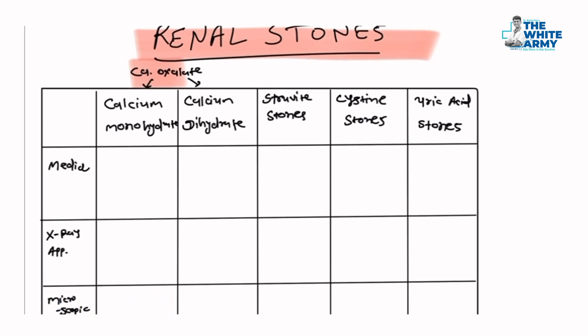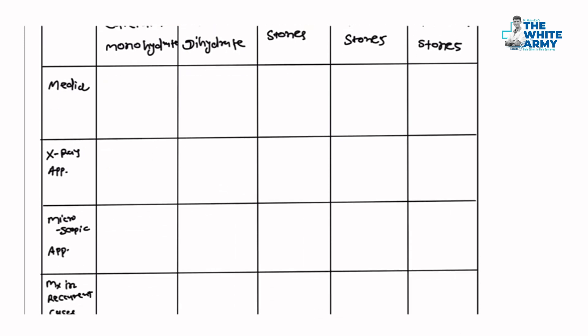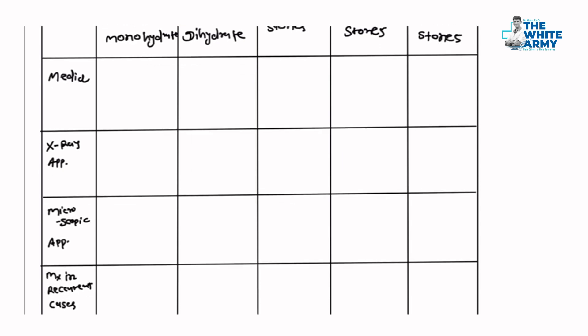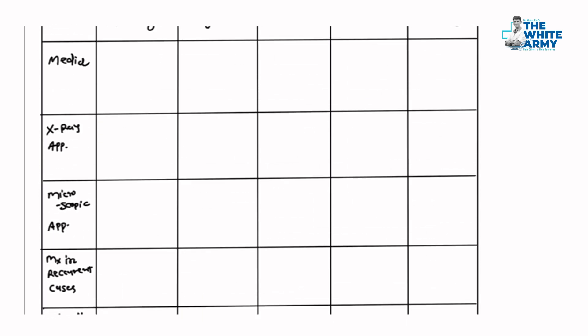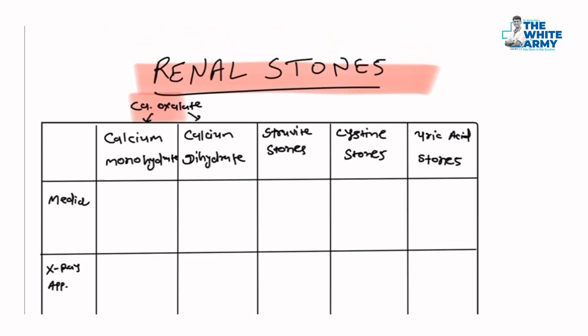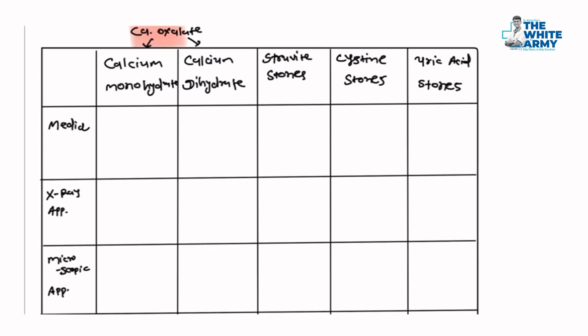We'll divide the table into topics: the medium (acidic or basic), appearance on X-ray, microscopic appearance, management in recurrent cases, and some miscellaneous points. You'll get your short one to two questions from this table, so let's understand.